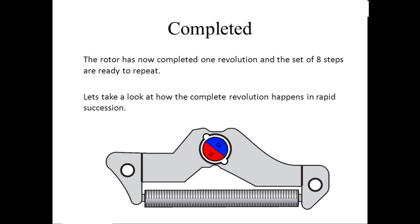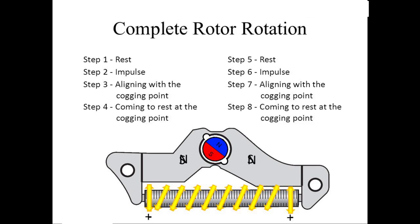Completed. The rotor has now completed one revolution and the set of 8 steps are ready to repeat. Let's take a look at how the complete revolution happens in rapid succession. Complete rotor rotation.